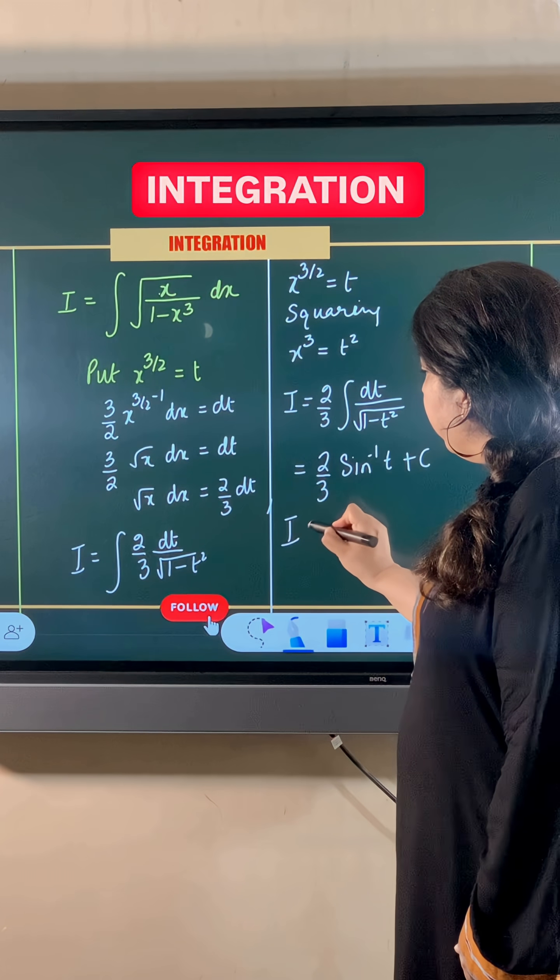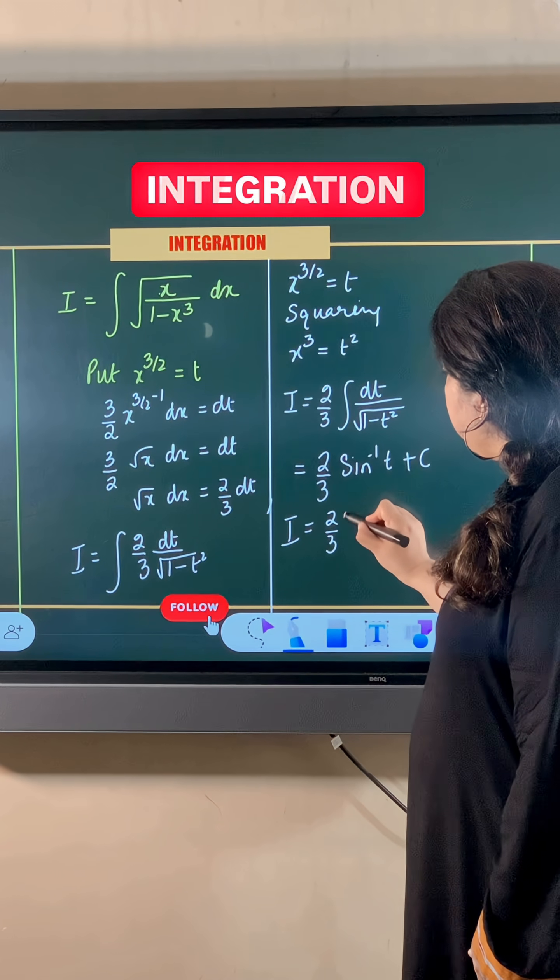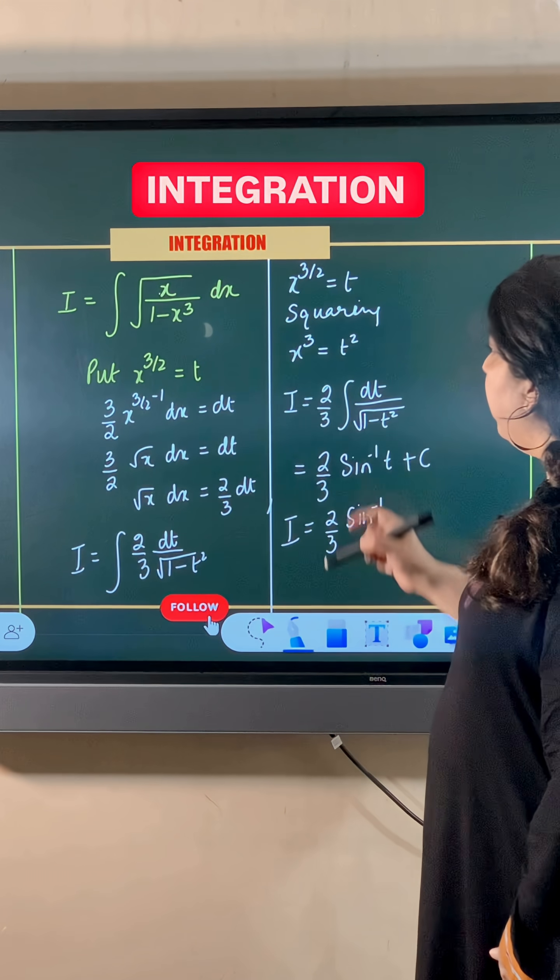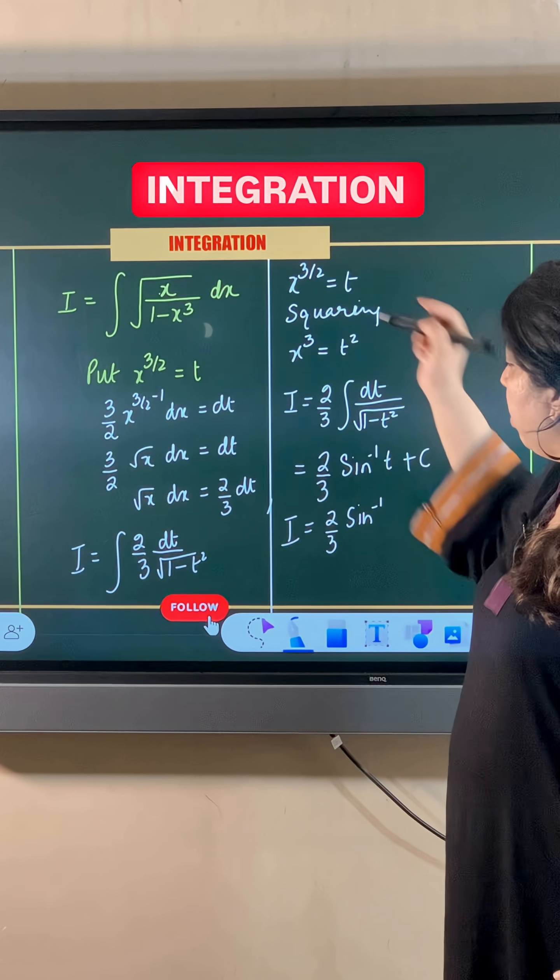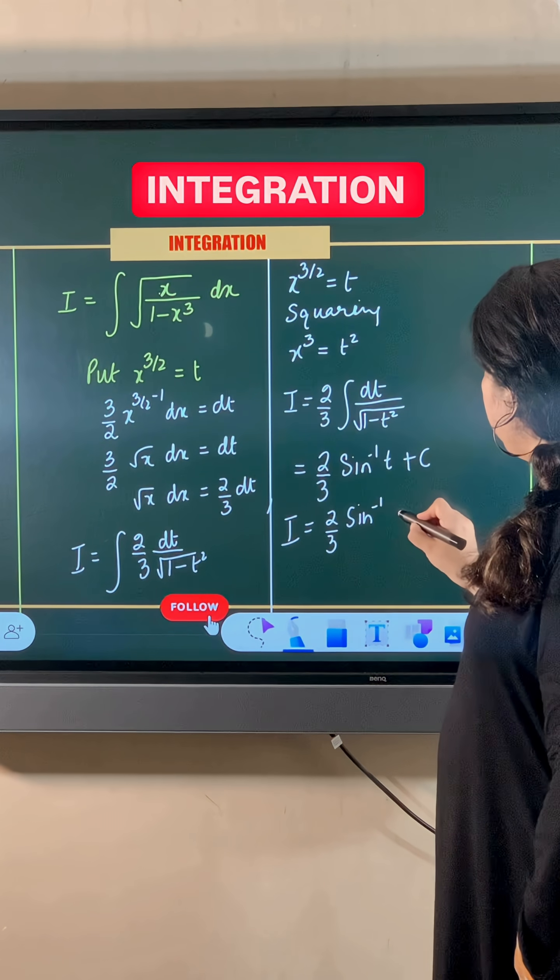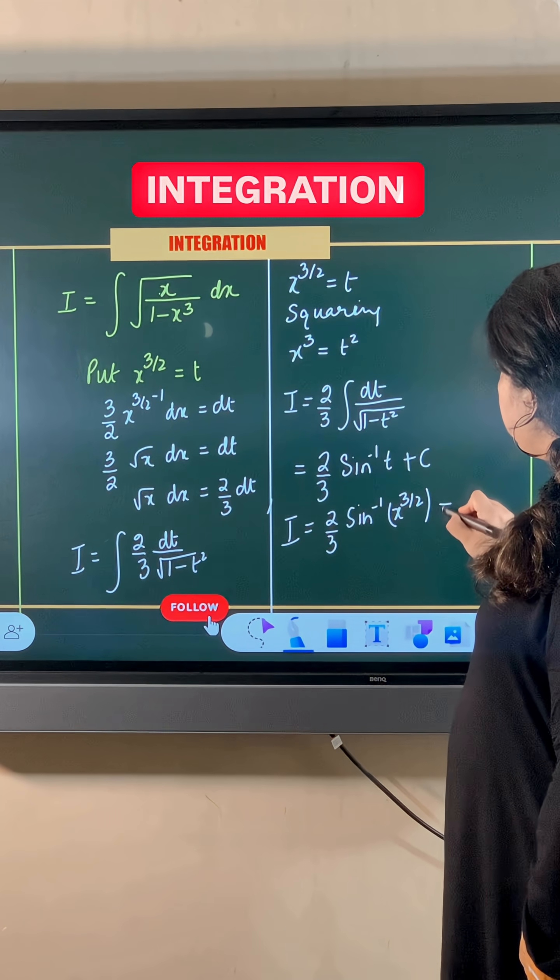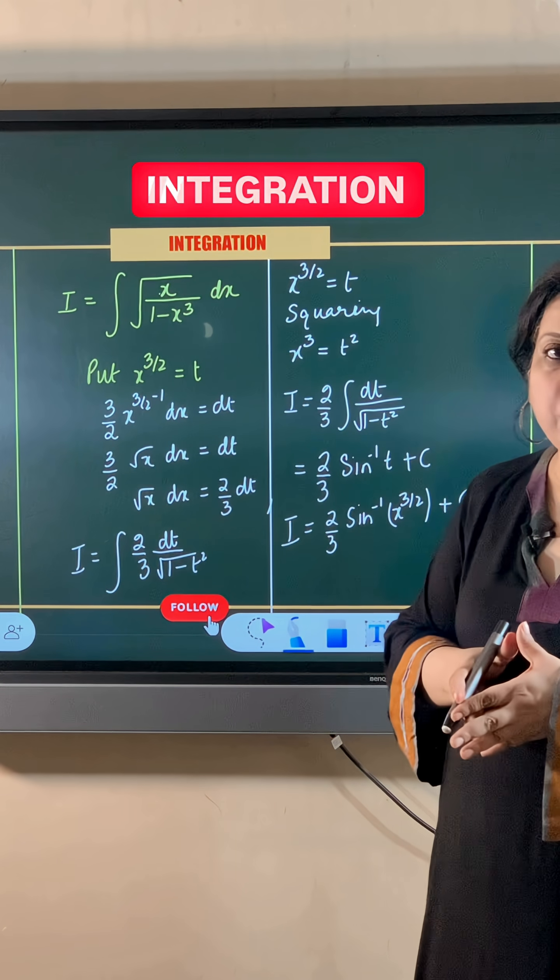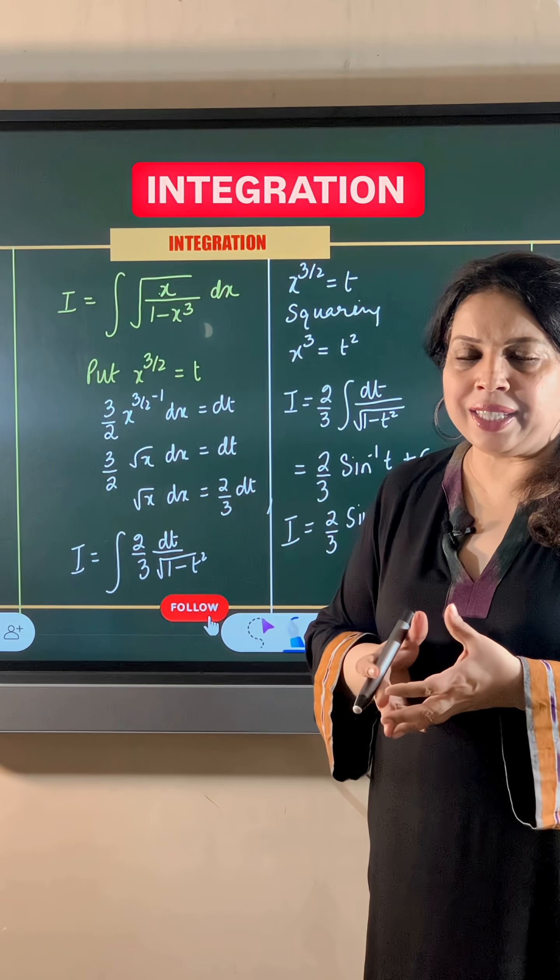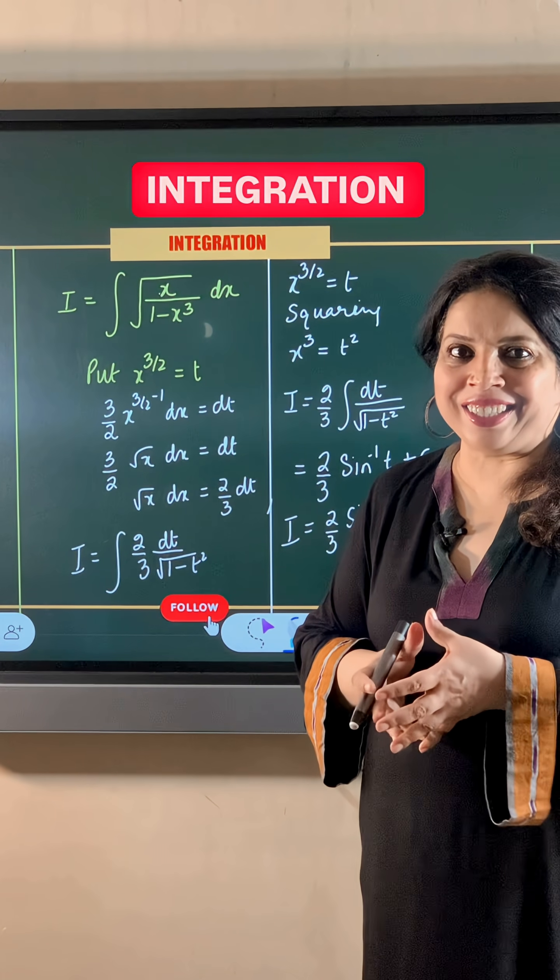To get the final answer, let's back substitute the value of t. So t is x to the power 3 by 2. So this becomes 2 by 3 sine inverse x to the power 3 by 2 plus c is the final answer.